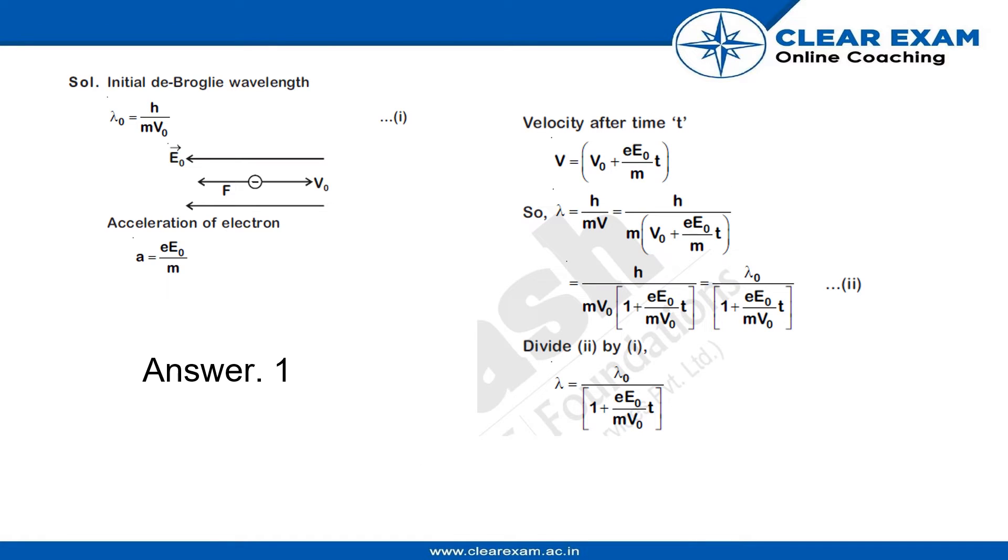Let the initial de Broglie wavelength be given by λ₀ = h/(mv₀). Therefore, the acceleration of the electron is given by a = eE₀/m.